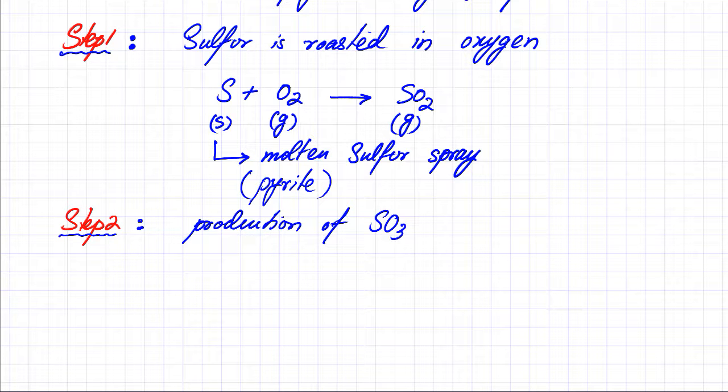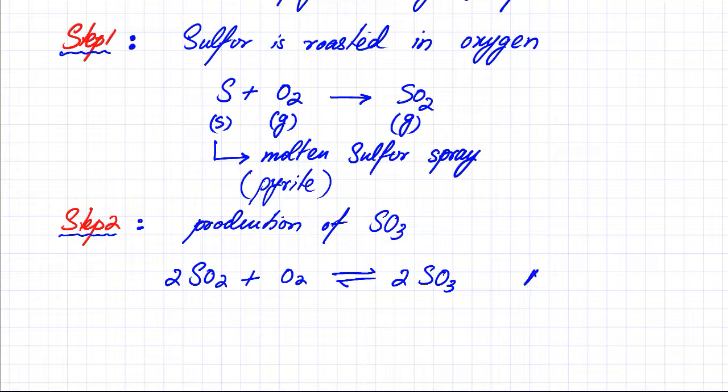Sulfur trioxide is produced by reacting sulfur dioxide with oxygen: 2SO2 + O2 ⇌ 2SO3. The forward reaction is reversible and exothermic, so the enthalpy is negative. That's step two.